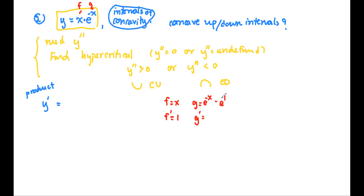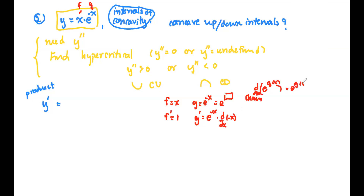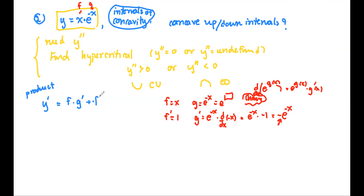For g prime, this is e to a function, so by the chain rule it's e to that function multiplied by the derivative of that function. Don't miss the sign — g prime equals e to the negative x times negative one, which is negative e to the negative x. Now back to the product rule formula: f times g prime plus f prime times g.